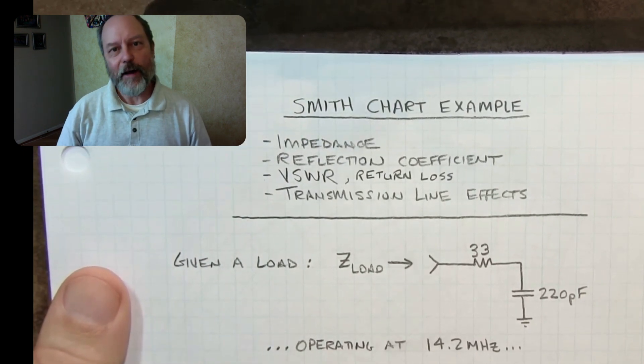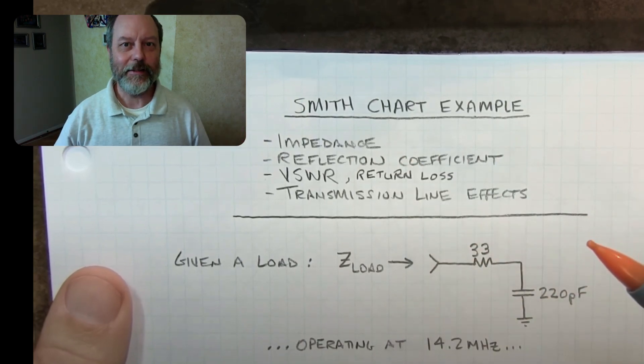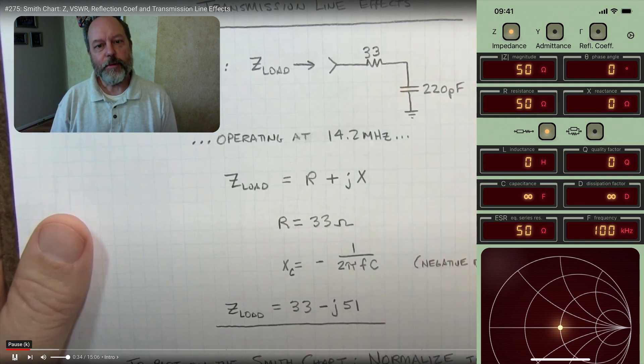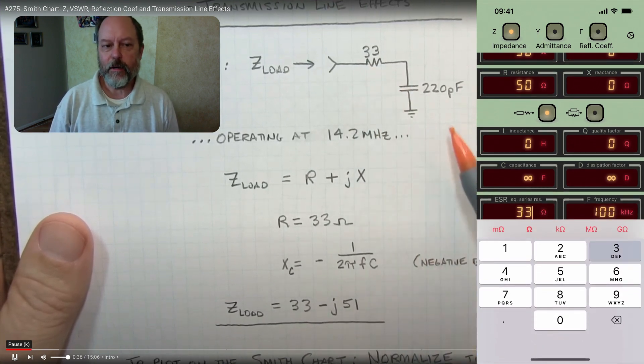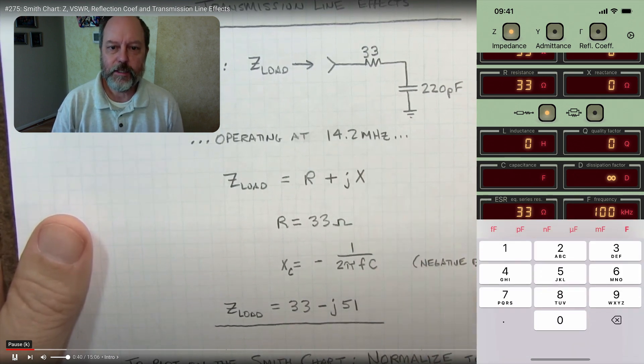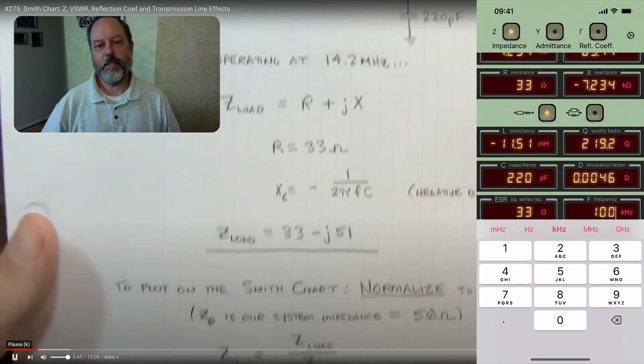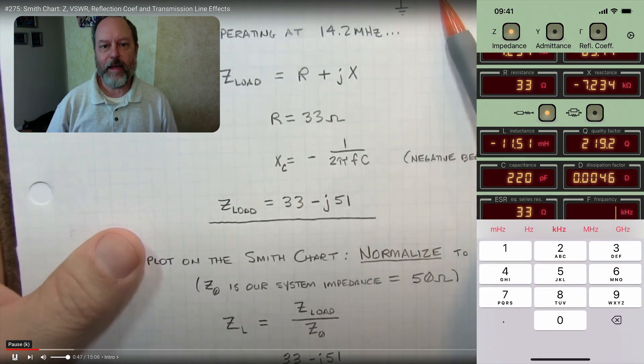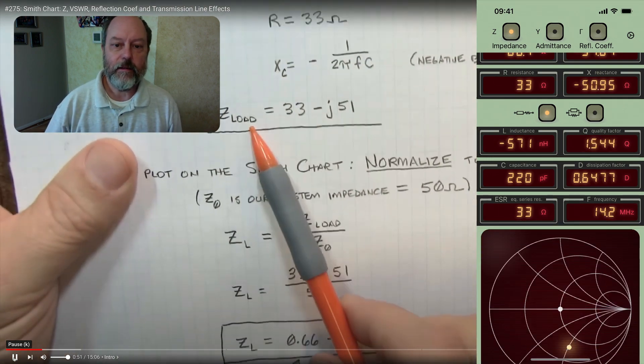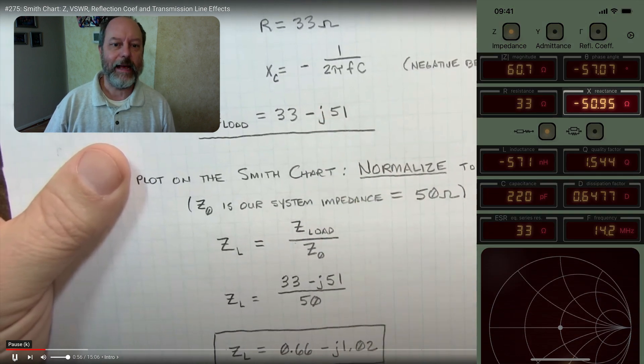So next, we're going to move on to a follow-on video of his, and that gets into even more fun stuff. So we're going to start by setting up a series load of 33 ohms, followed by 220 picofarads, all driven at 14.2 megahertz, just like Alan has in his video. And instead of calculating the reactants, we're just going to enter the three values and let the app calculate the reactants. And you can see that the reactants calculated is essentially the same negative 51 ohms shown by Alan.